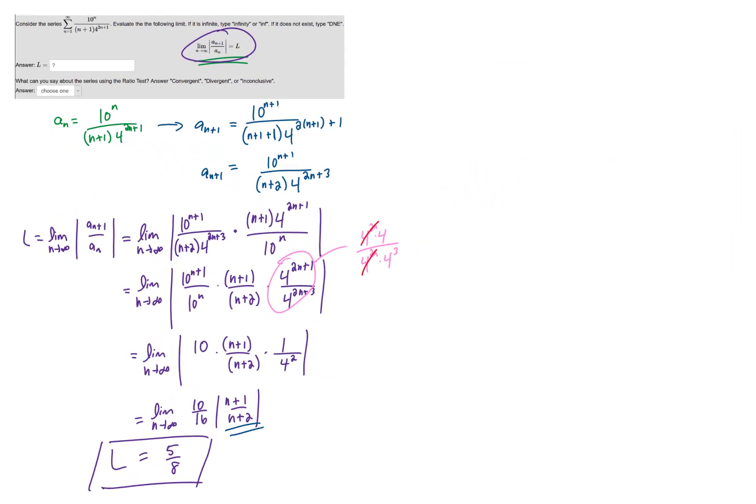The last question is what does this limit say about the ratio test? Well the limit turned out to be a number that is less than 1, so the ratio test says that our series converges.